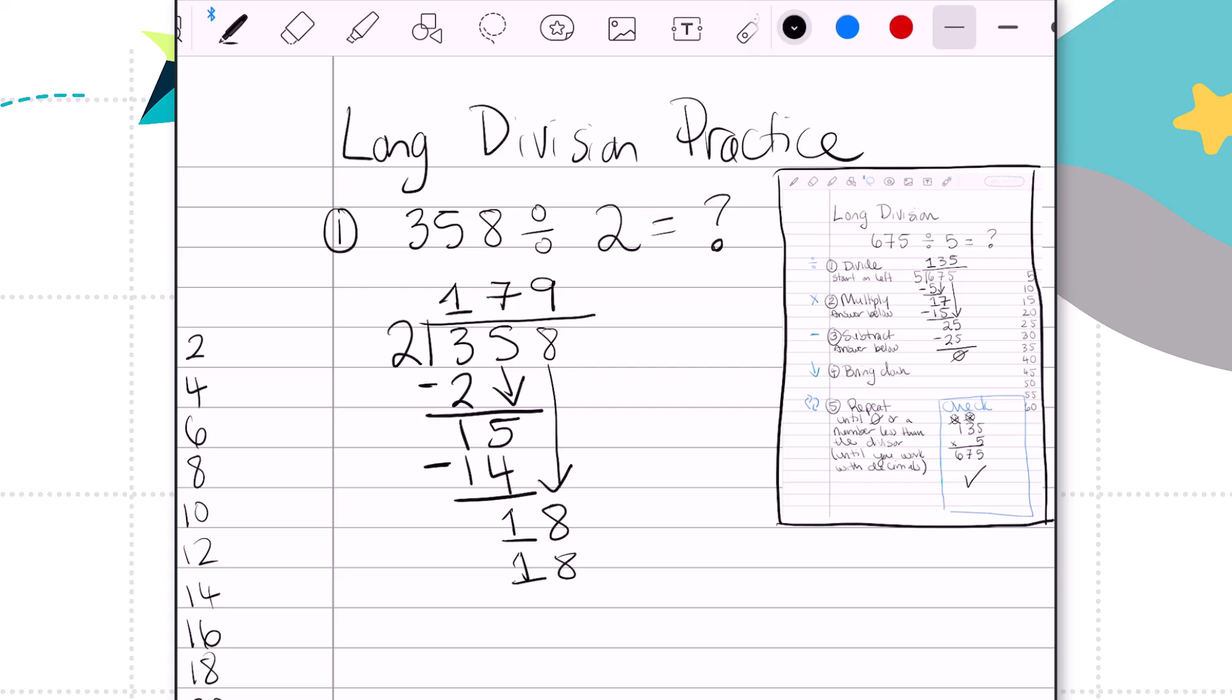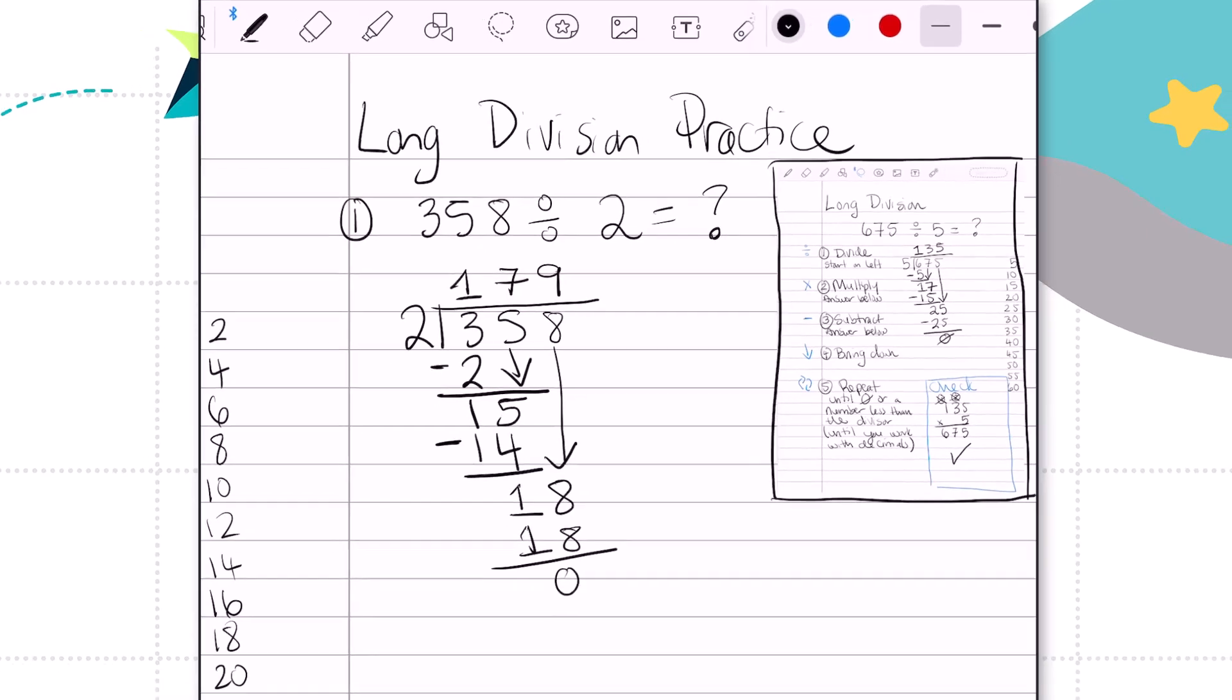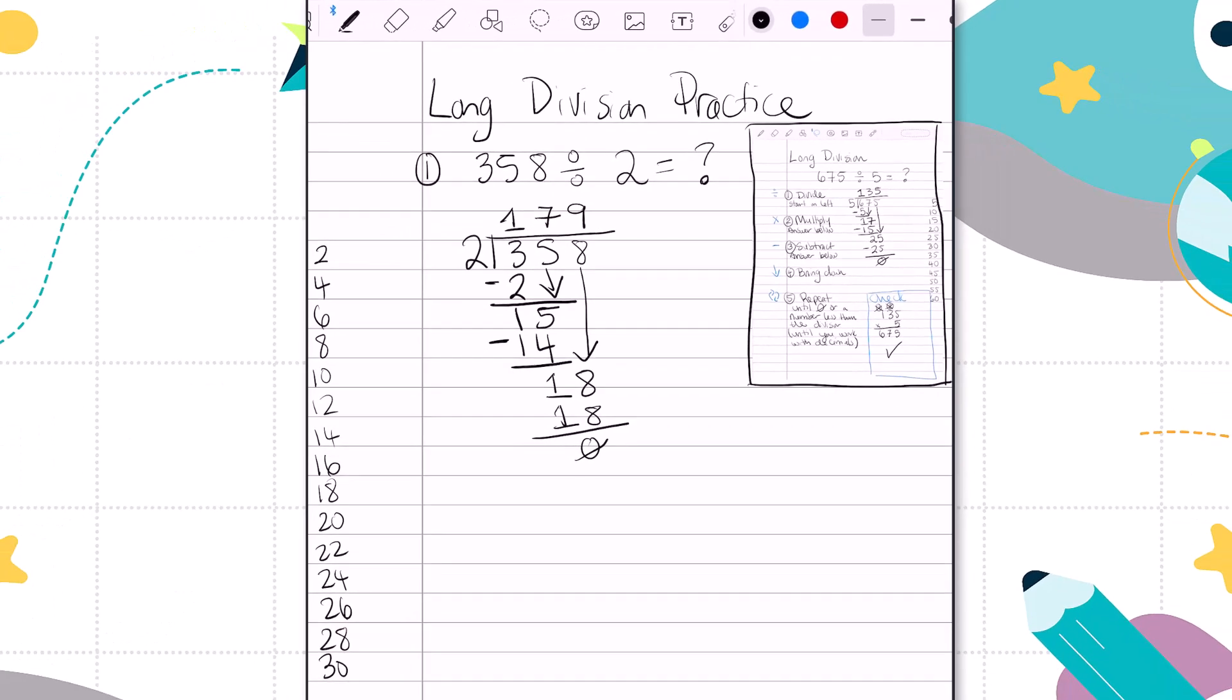So my answer is 179. Now I always complete the check step with multiplication to make sure that we have accurately answered the problem. So I'm going to take my quotient, which is 179. And I'm going to undo the division by multiplying by 2. 179 multiplied by 2.